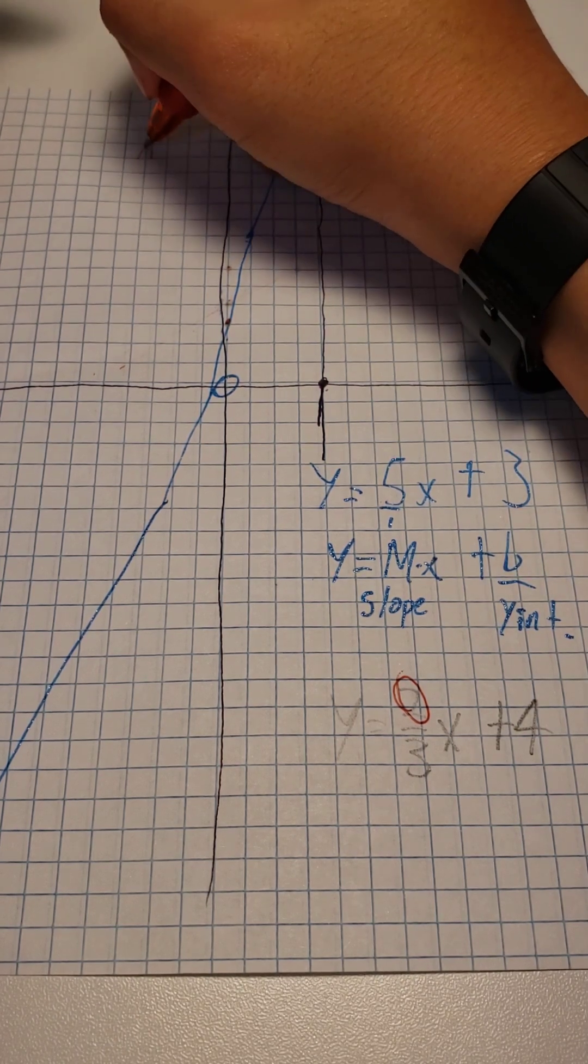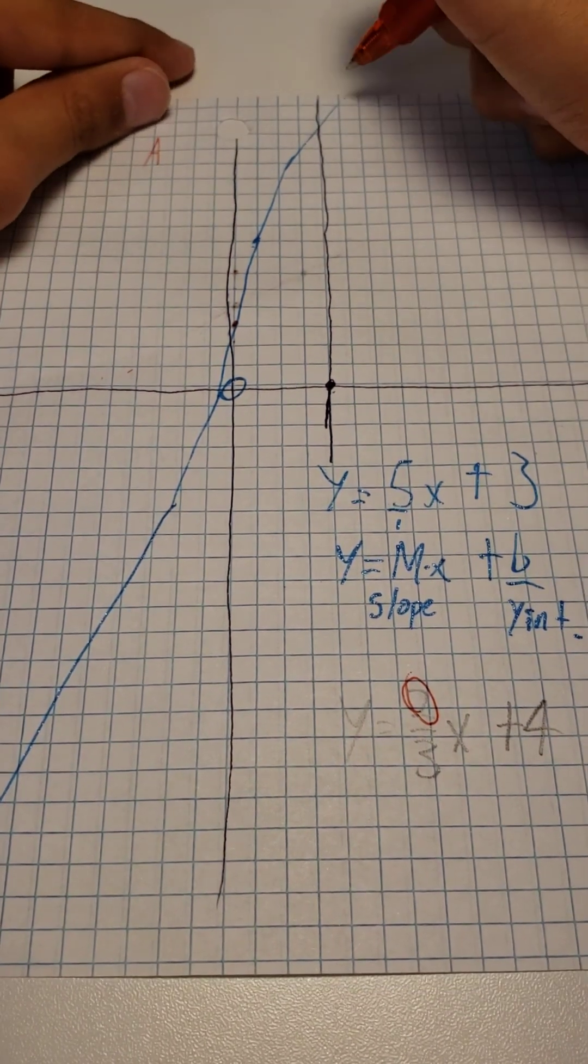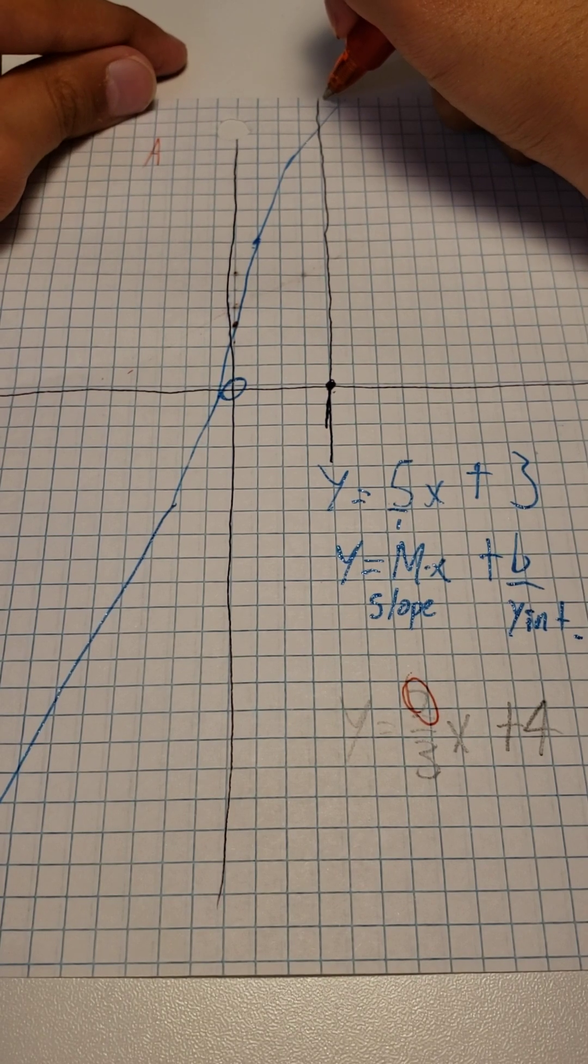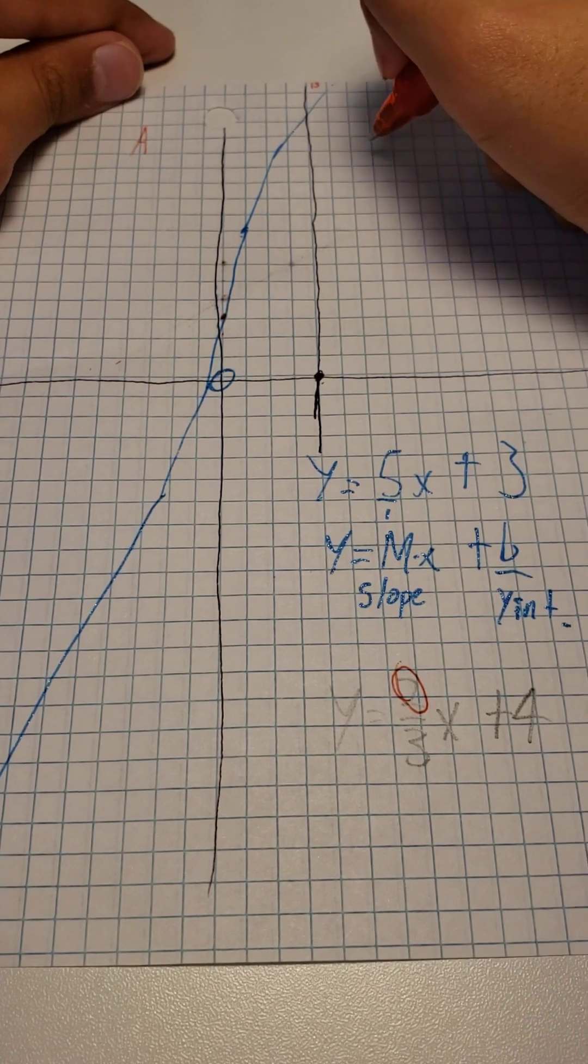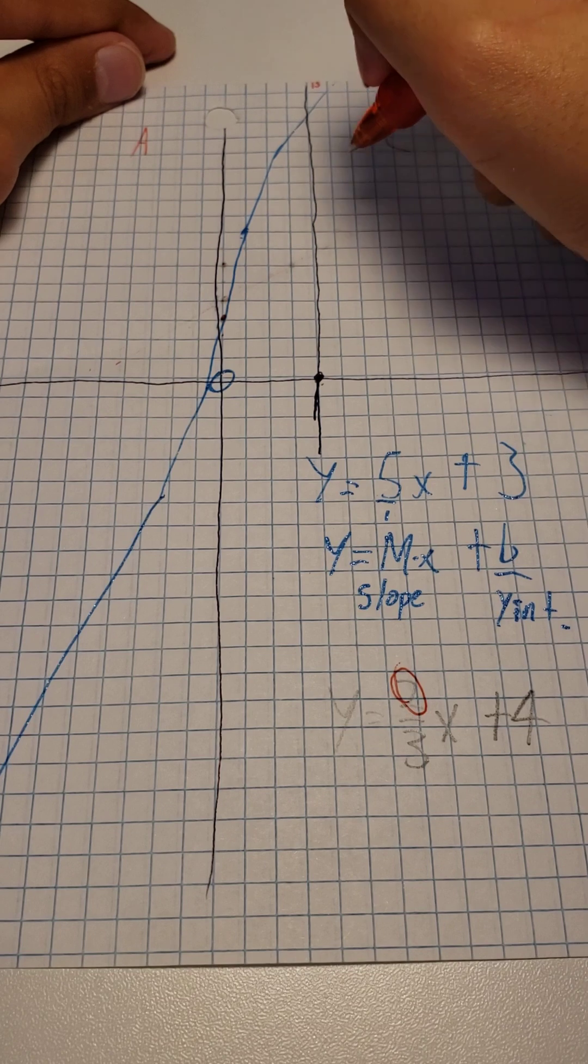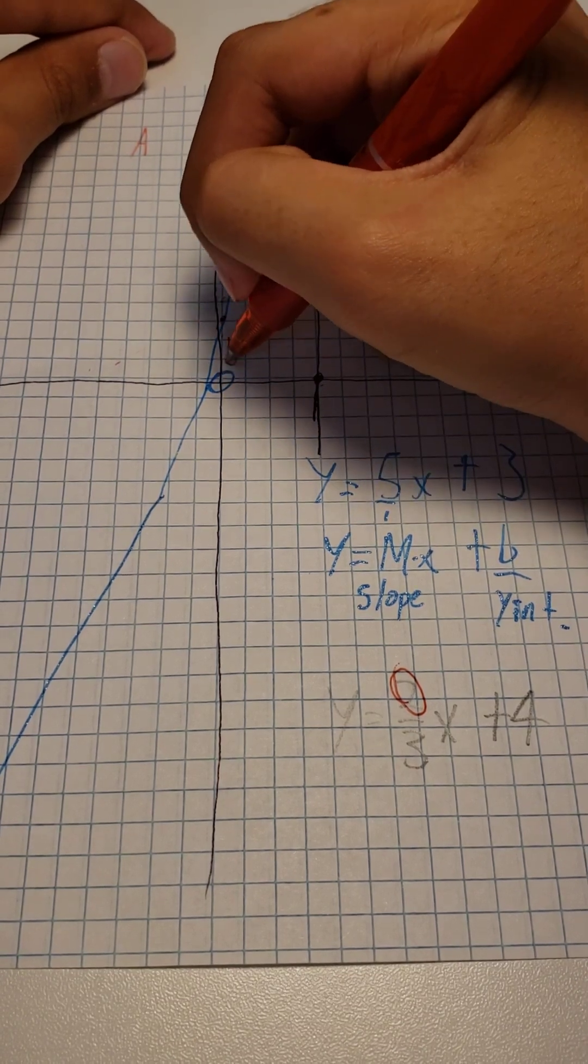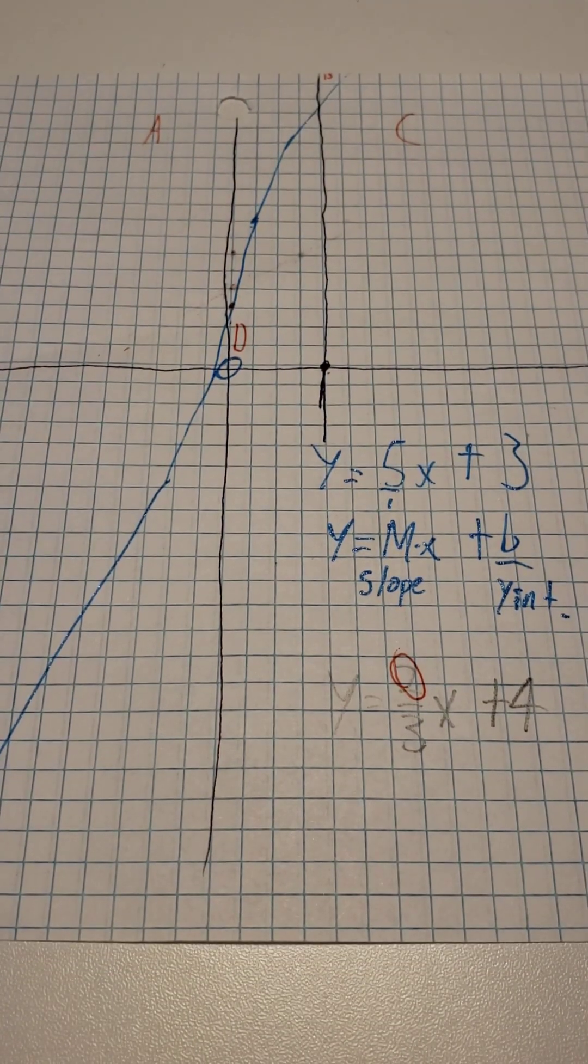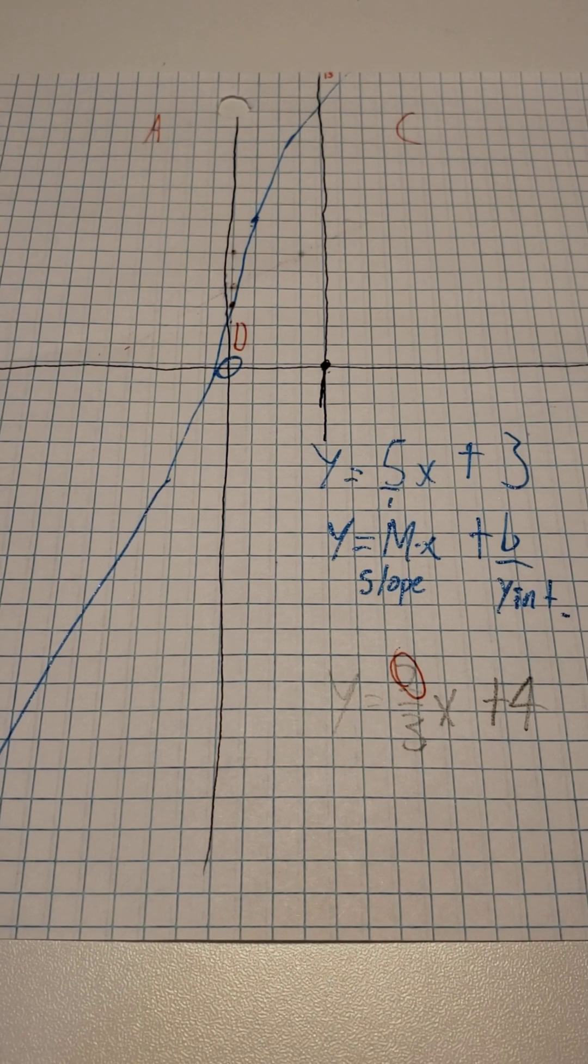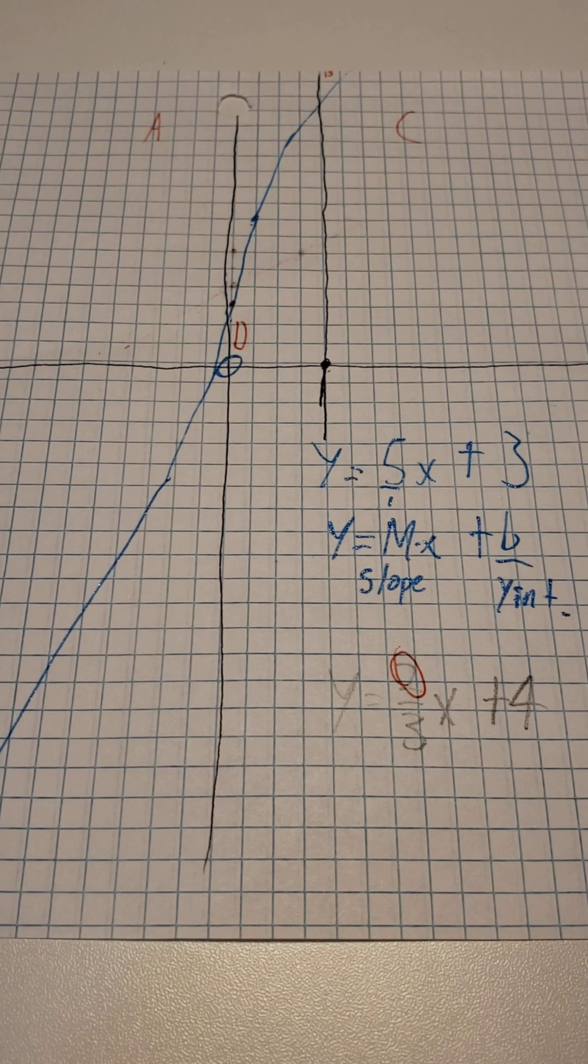Let's name them. This quadrant is A. This itty-bitty one is B. This other big one is C. And then this one is going to be D. 4 quadrants divided by 2 lines.